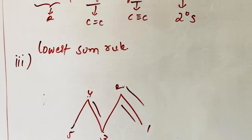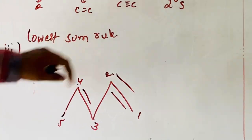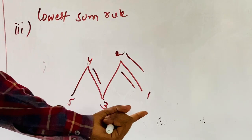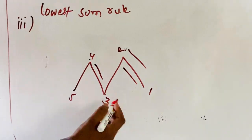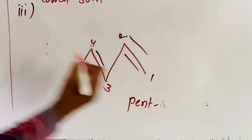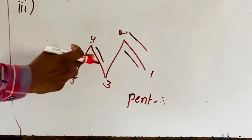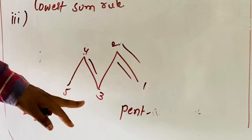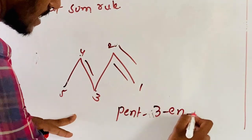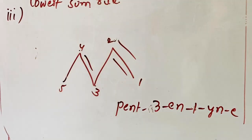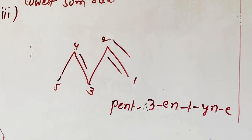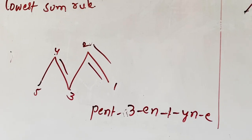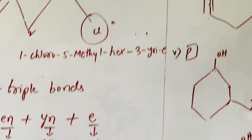From right to left, the multiple bond comes between one and two. The root word is 'pent'. Priority: double bond is higher priority than triple bond. So we write pent-3-yn-1-yne — that is pent, triple bond at three, double bond at one, giving pent-3-en-1-yne.